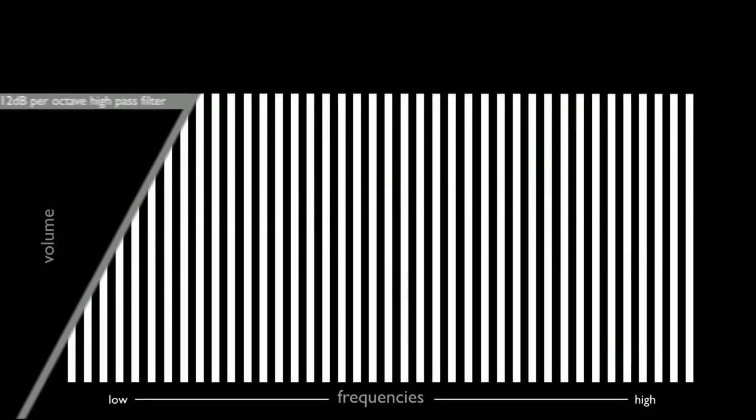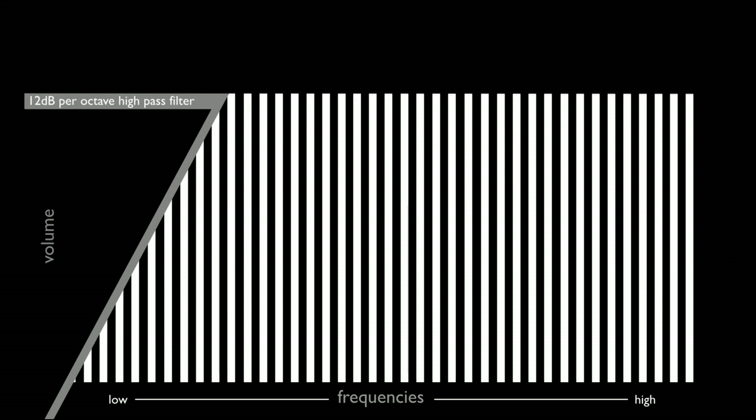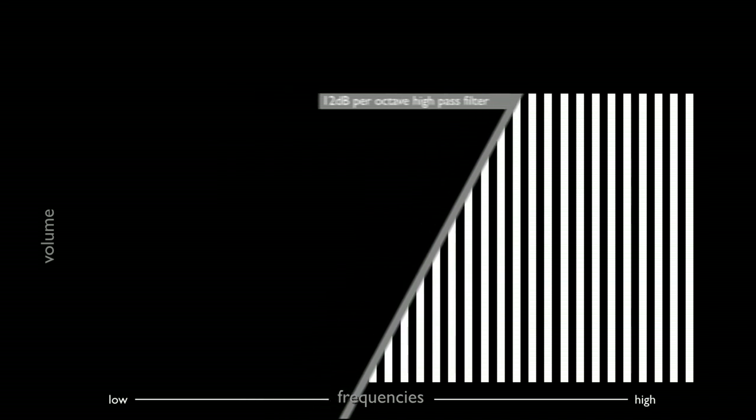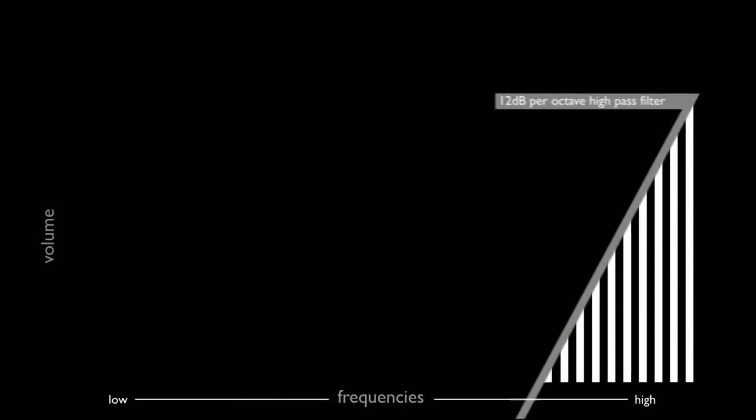The high pass filter. This successively removes low frequencies from the sound. The harmonics below the cutoff point are progressively attenuated or removed.